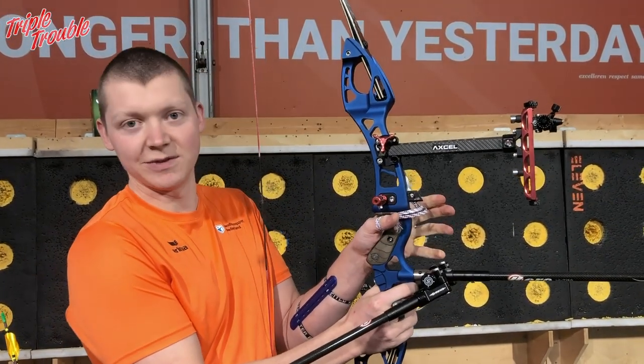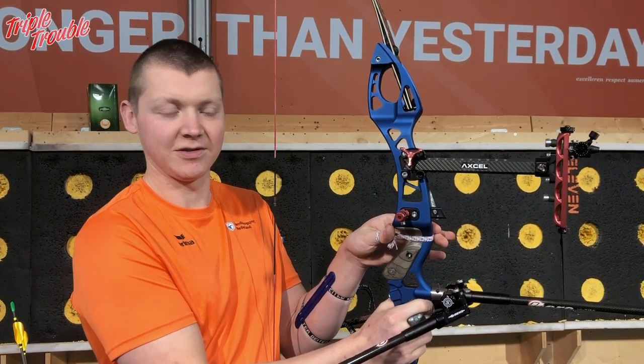So because you hold your bow in a relaxed manner and your bow jumps out of your hand when you relax it, the sling is there to prevent your bow from falling onto the ground.